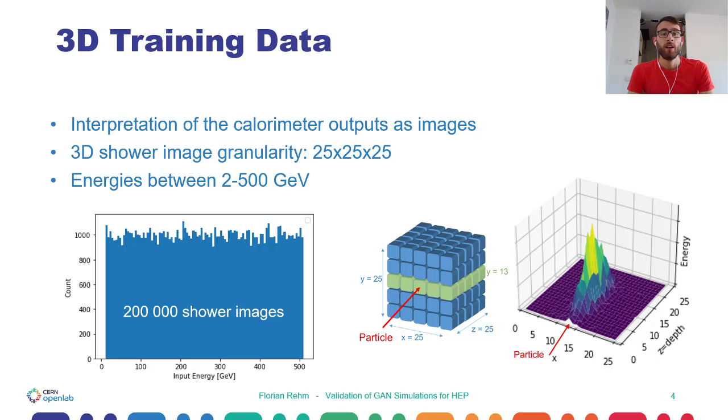We interpret the outputs of the calorimeter as images. One event, that means the measurement of the energy of one primary particle, creates one static three-dimensional shower with the dimensions 25 by 25 by 25 pixels. We have 200,000 shower images within a uniform energy range of 200 to 500 GeV.